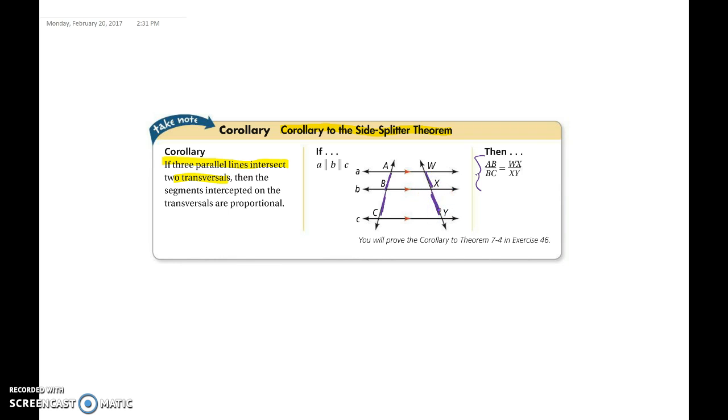It's not the only proportion that you can create. There are different ones. As long as you're consistent in the way that you create it, you could have done AB over WX, you could have done BC over XY, and that would also be a proportion that works as well.